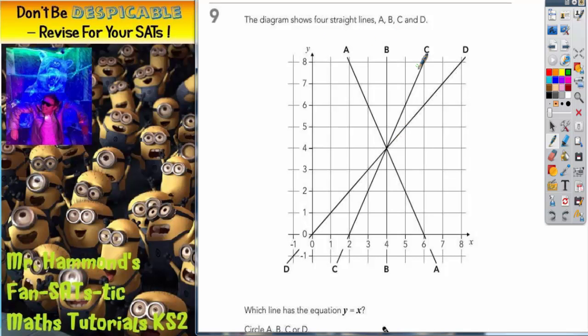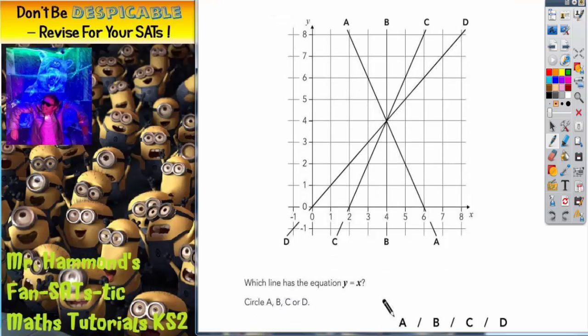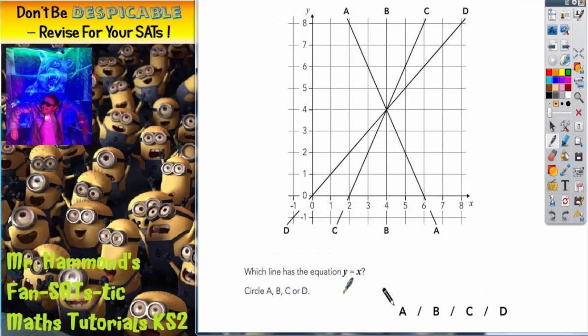As you can see most of them are slanted lines with the exception of line B which is a vertical line straight down. It says which line has the equation Y equals X? Circle A, B, C or D.